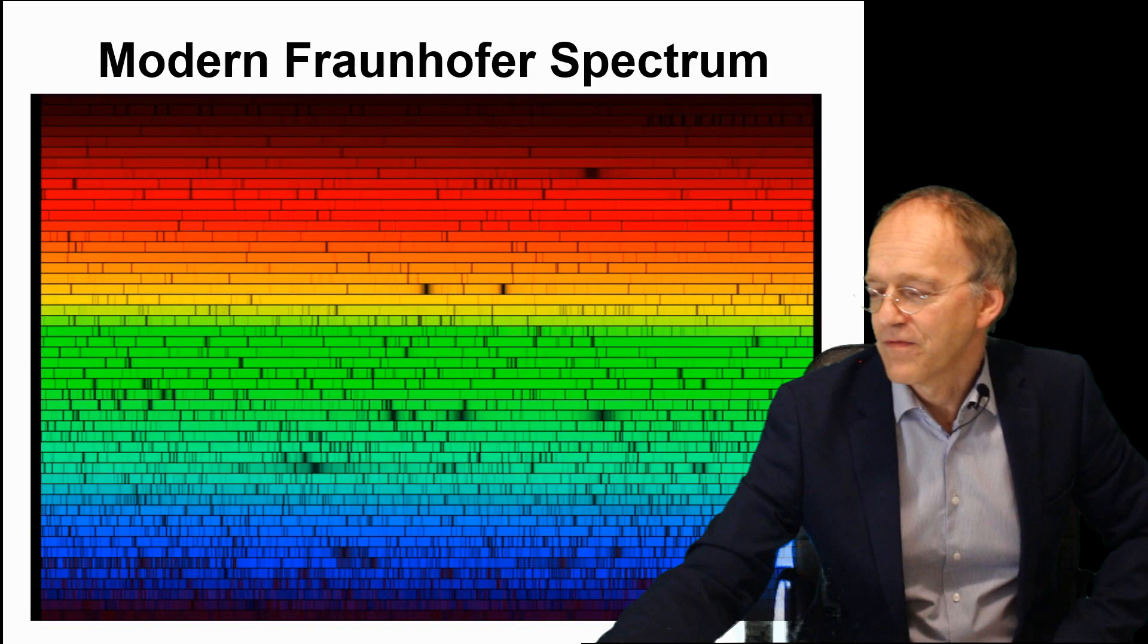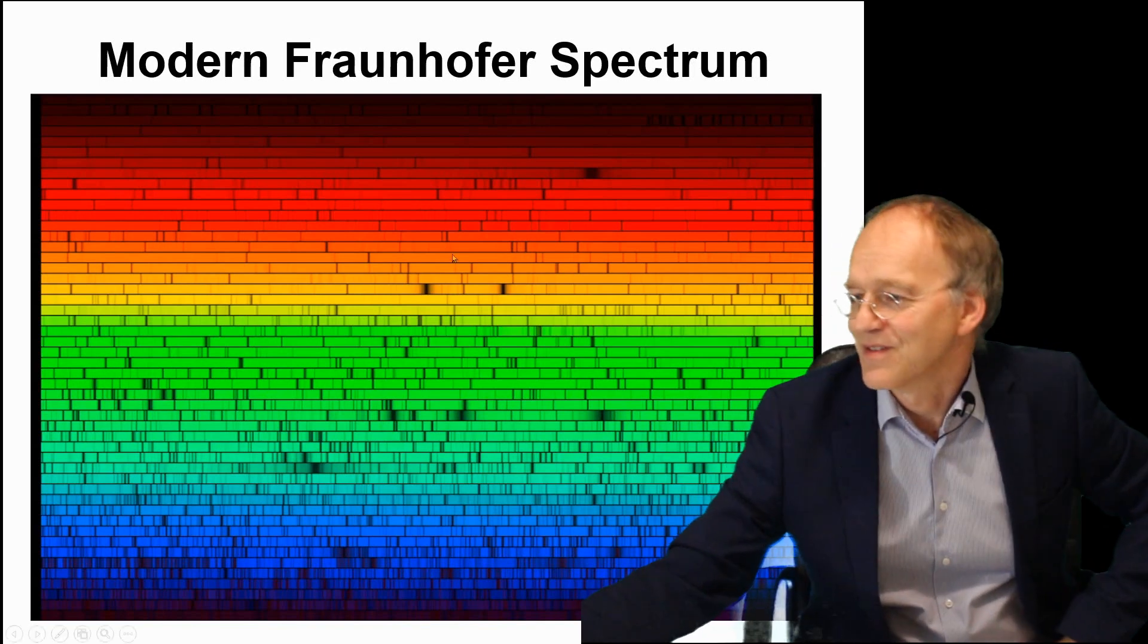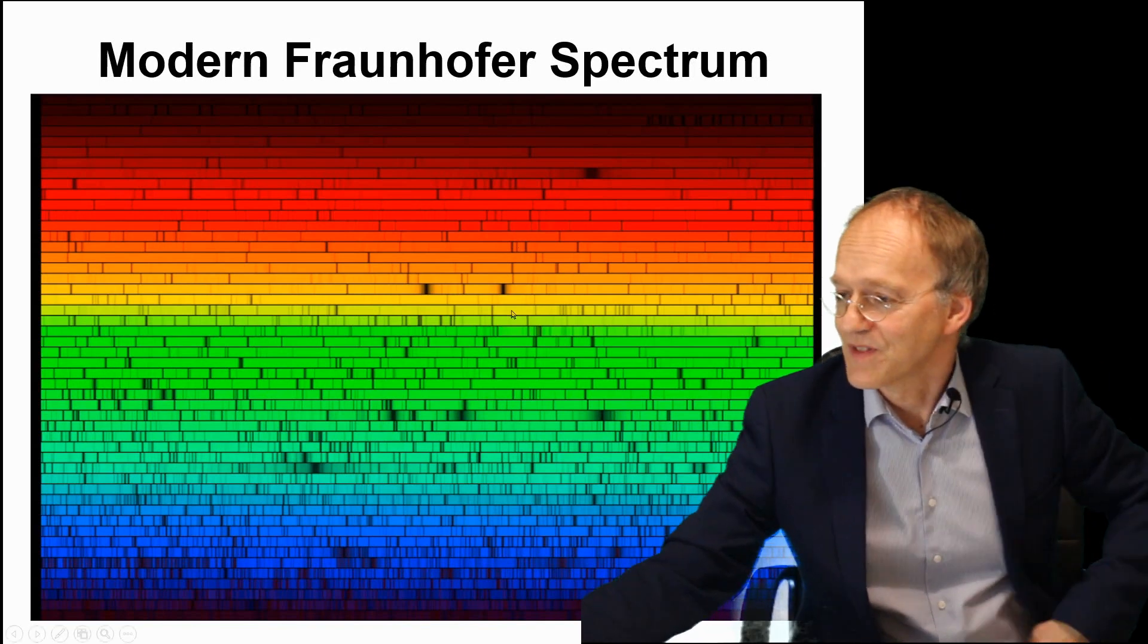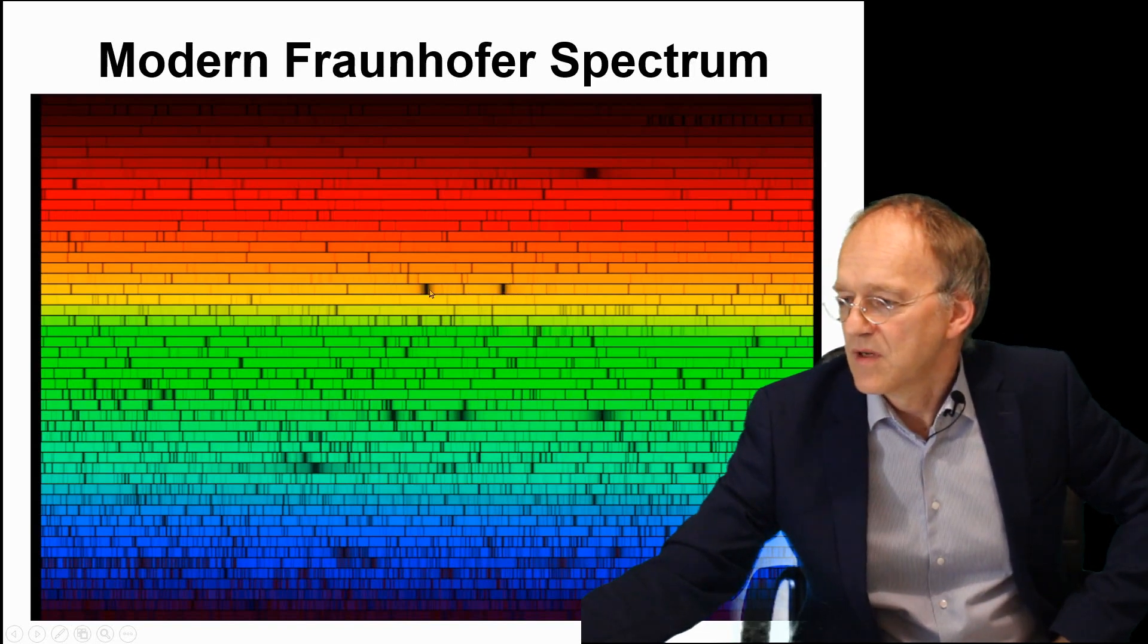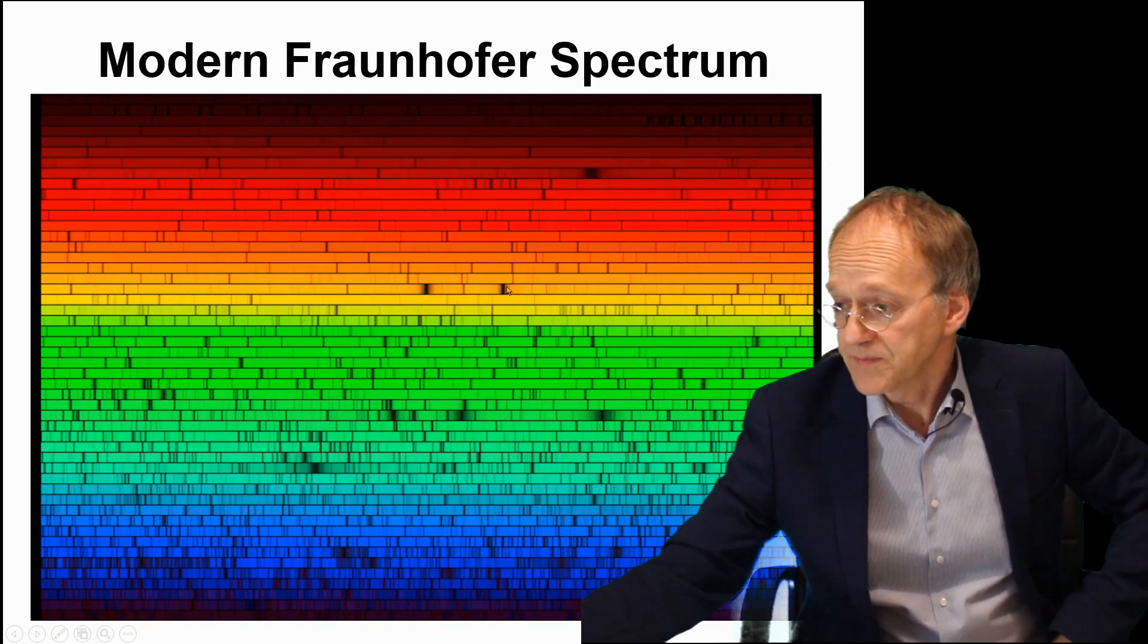Now a modern version of this Fraunhofer spectrum is very spectacular, much more precise of course. You see these black shadows, these black lines - this one would correspond to the sodium 589 as before.